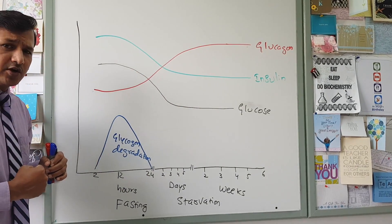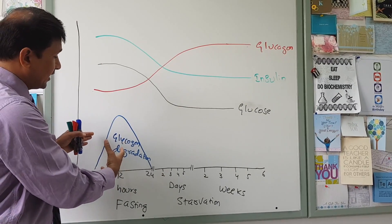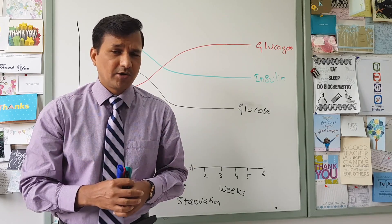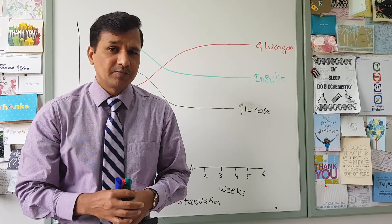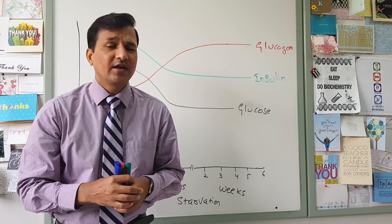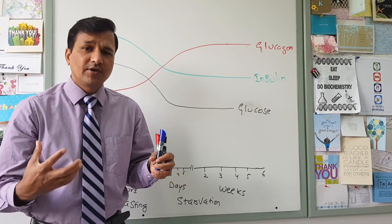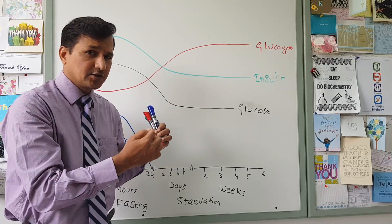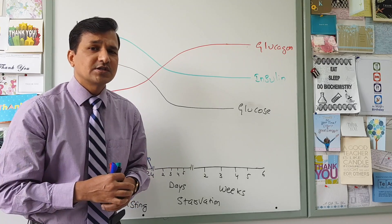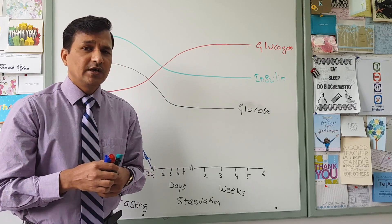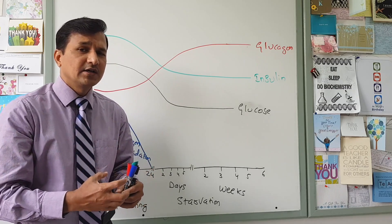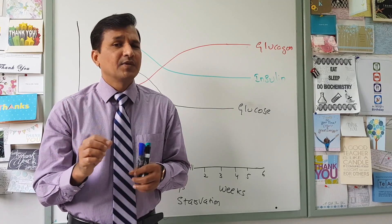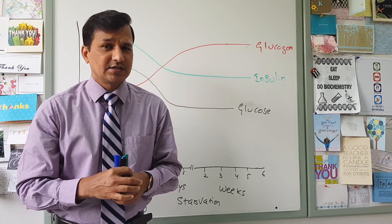Glucagon not only breaks down glycogen stores, it also breaks down lipid stores. Lipid is stored in adipose tissue beneath our skin. White adipose tissue contains triacylglycerol, which can be broken down to give energy. Glucagon binds to glucagon receptors on adipose tissue and activates hormone-sensitive lipase. That enzyme releases free fatty acids and glycerol into the blood. Free fatty acids are taken up by peripheral tissues — almost all tissues except red blood cells and the brain can use them for energy via beta oxidation.